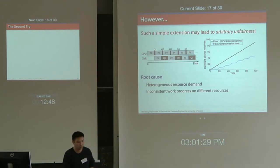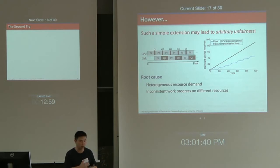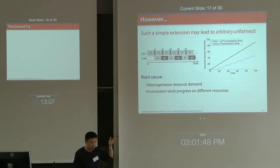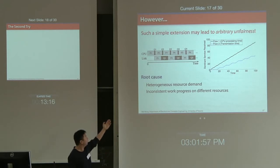Why does this happen? The reason is heterogeneous resource demand: the two flows require different amounts of resources on different resource types. This leads to inconsistent work progress across resources. For example, in the CPU, four packets may be processed, but when four packets have been processed in the CPU, the link can only finish just two packets.